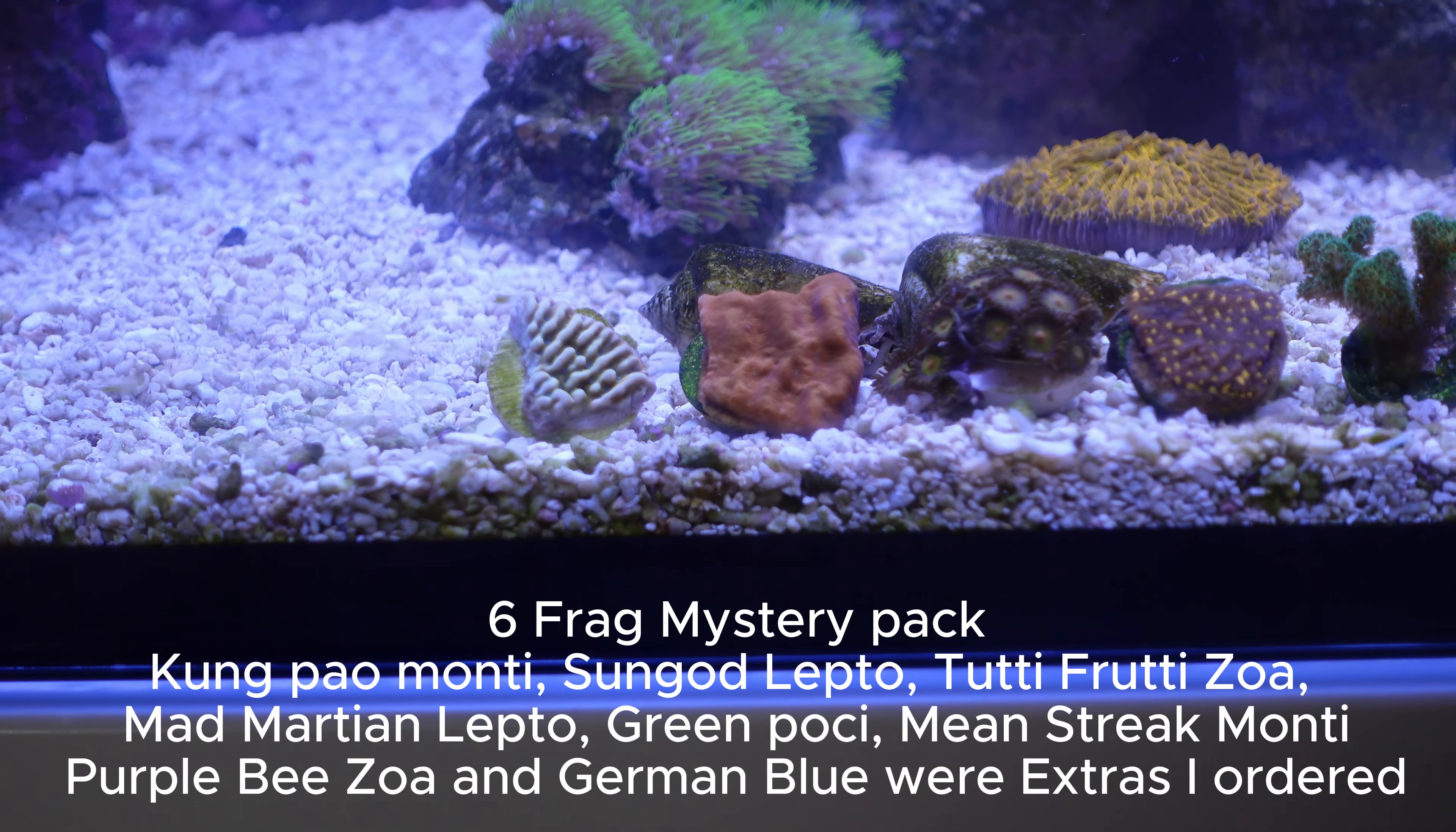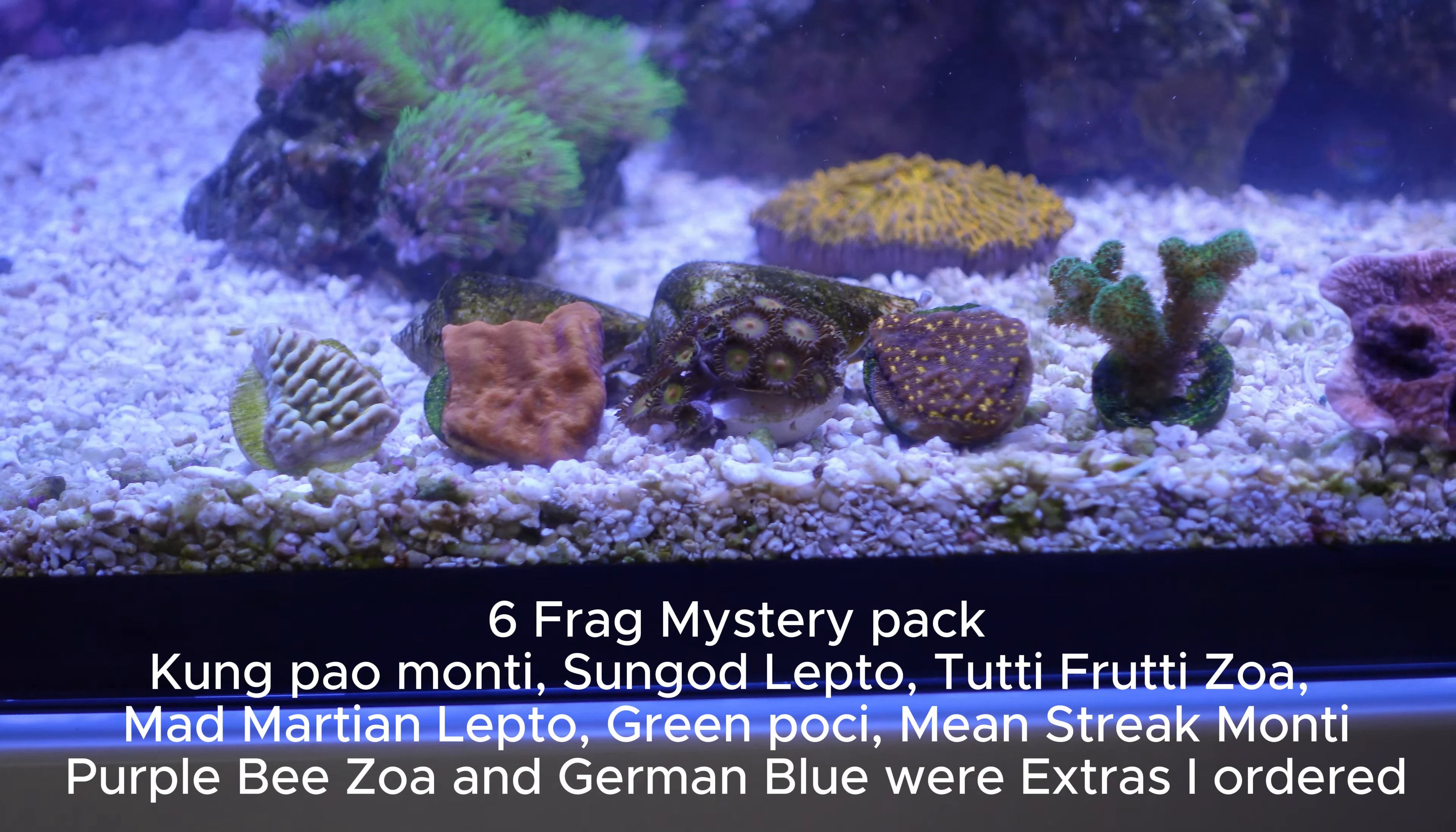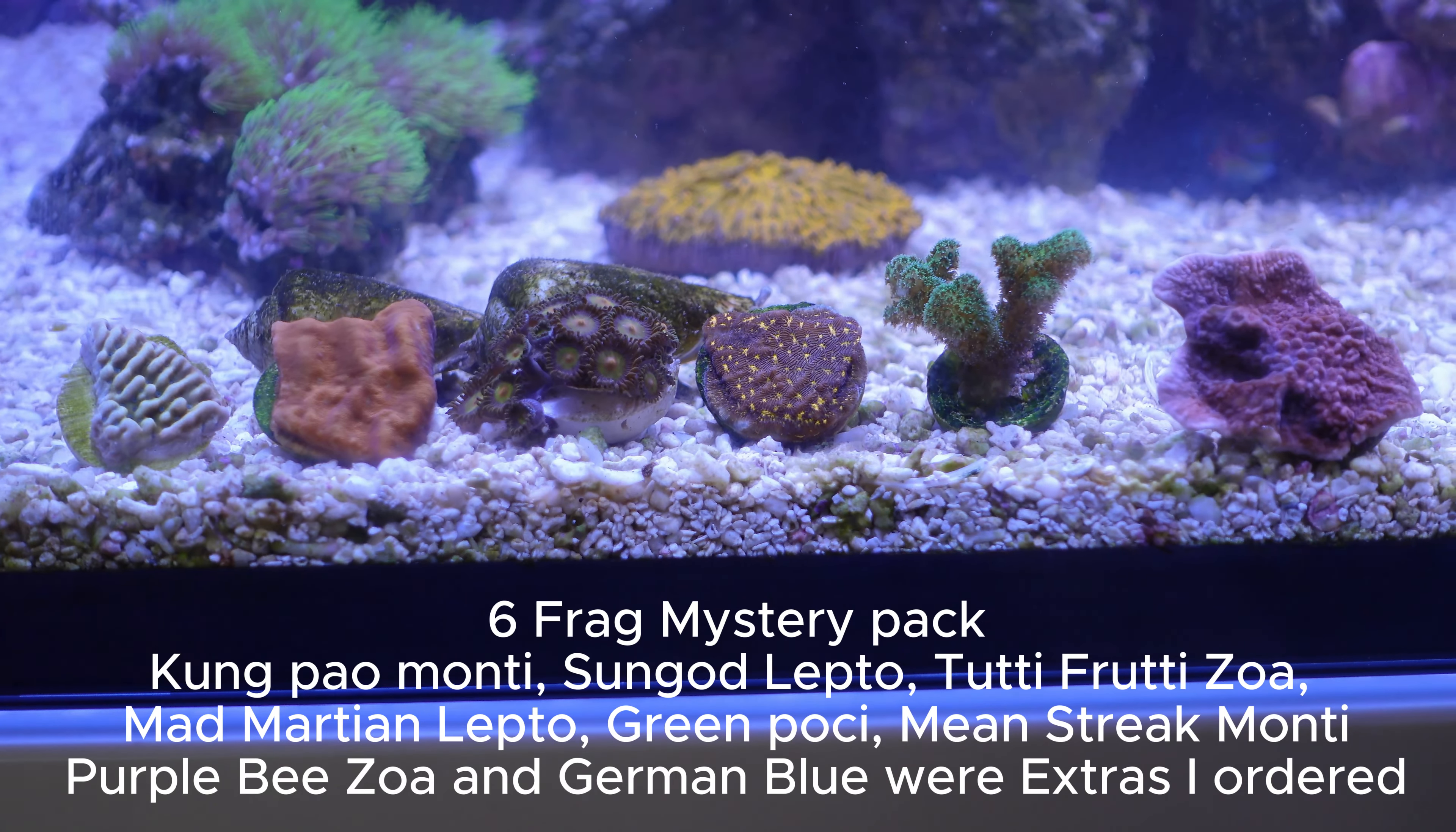So the corals in here from left to right are the Kung Pao, the Sun God Leptoseris, Tutti Frutti Zoas, Mad Martian Lepto, some green Pocillopora, Mean Streak Monti, then Purple Bee Zoas and German Blue Digi.